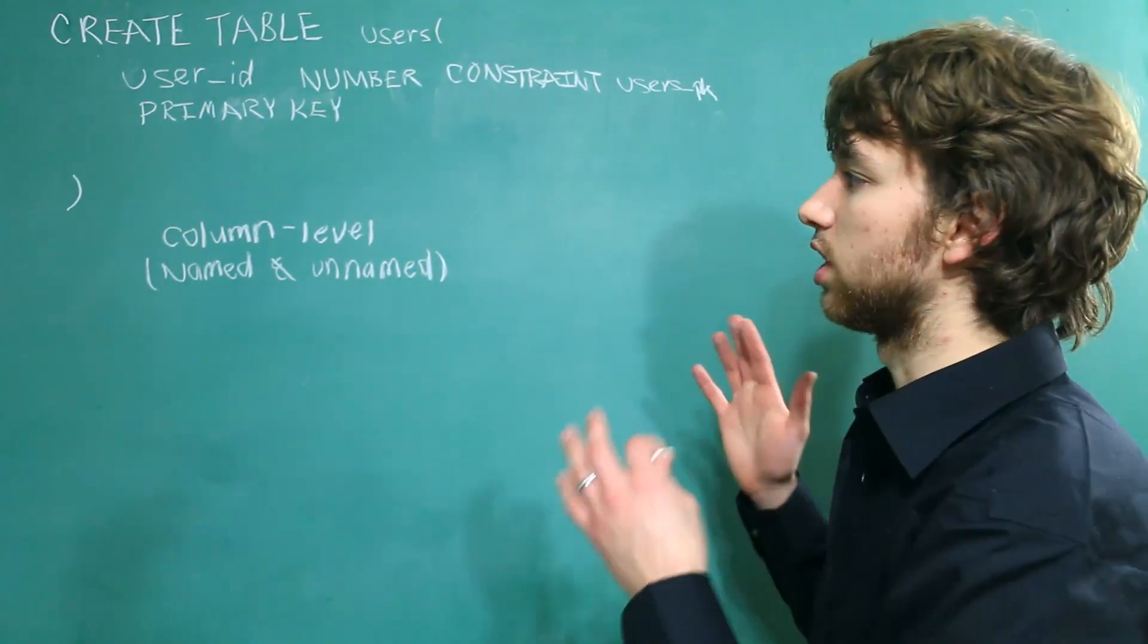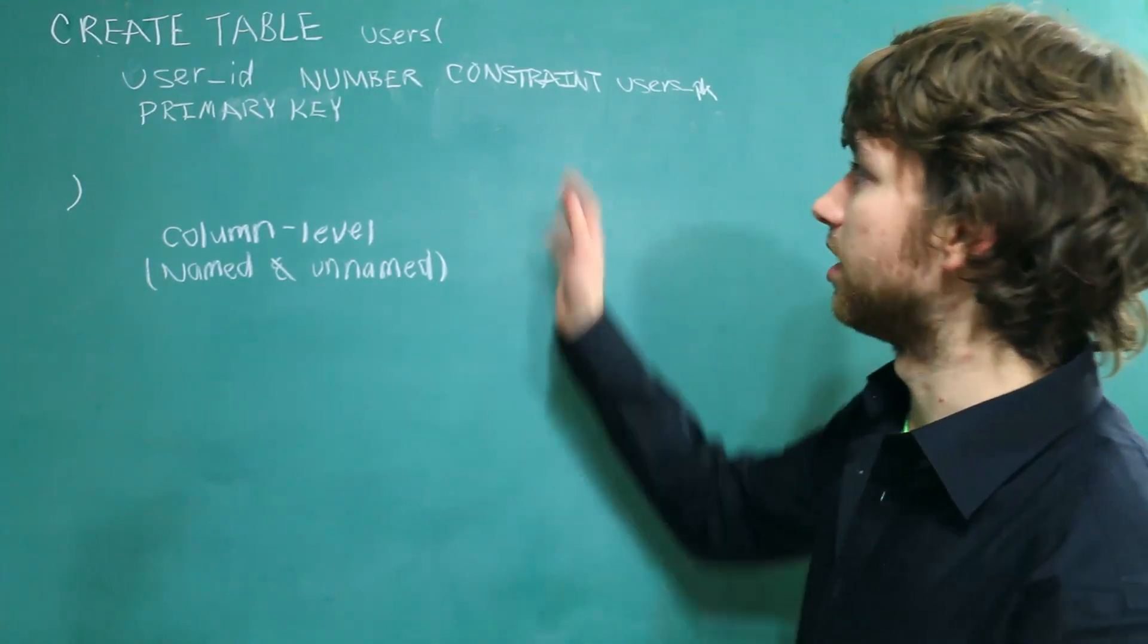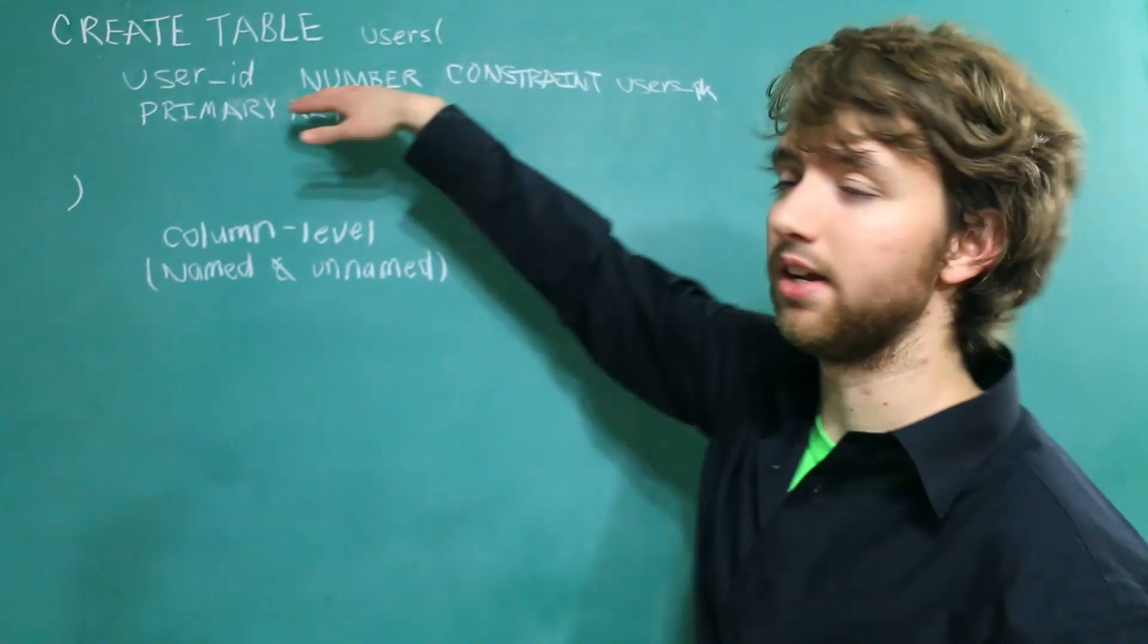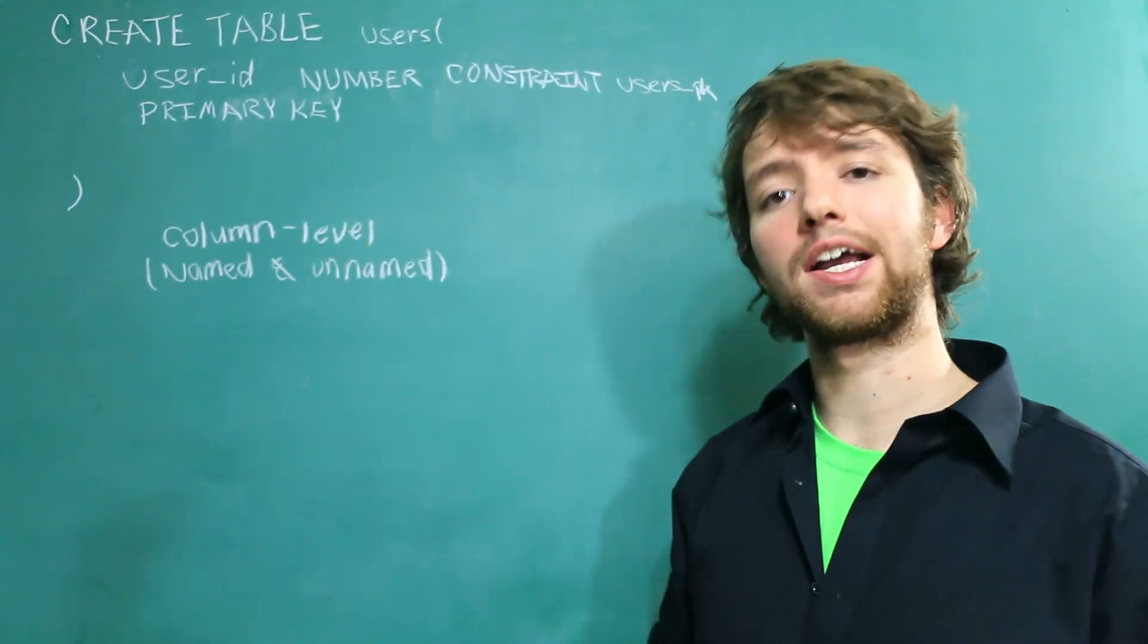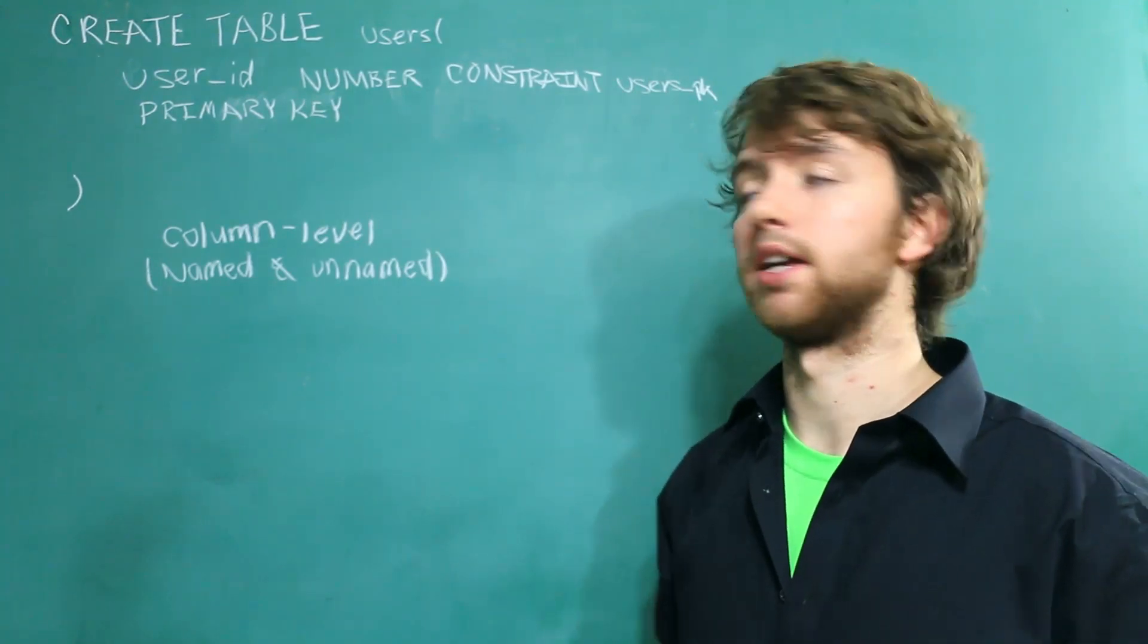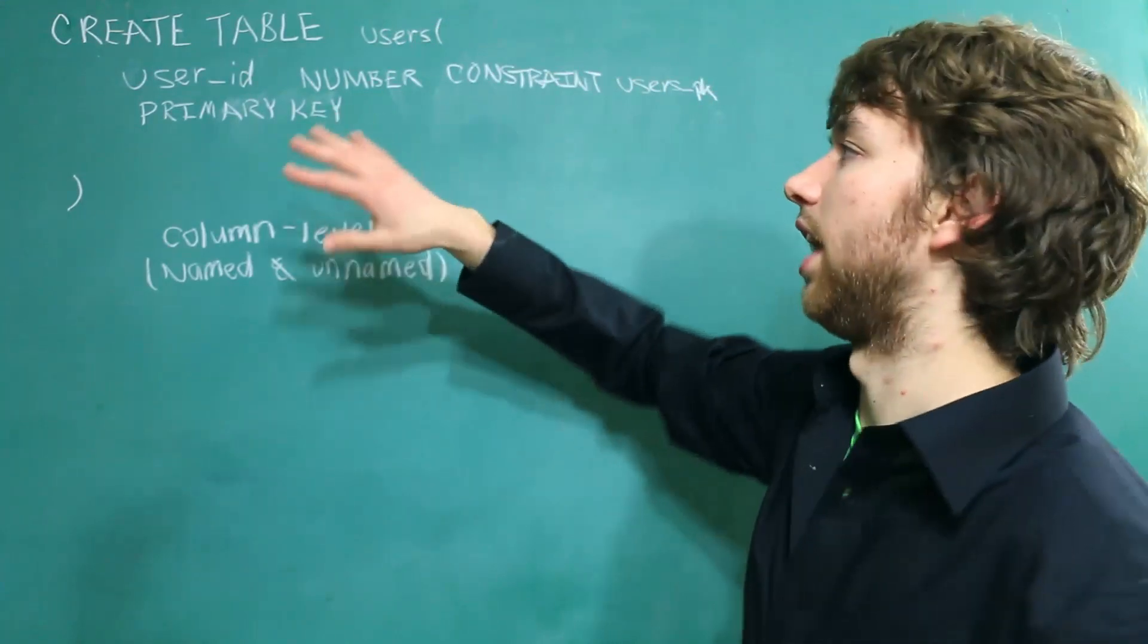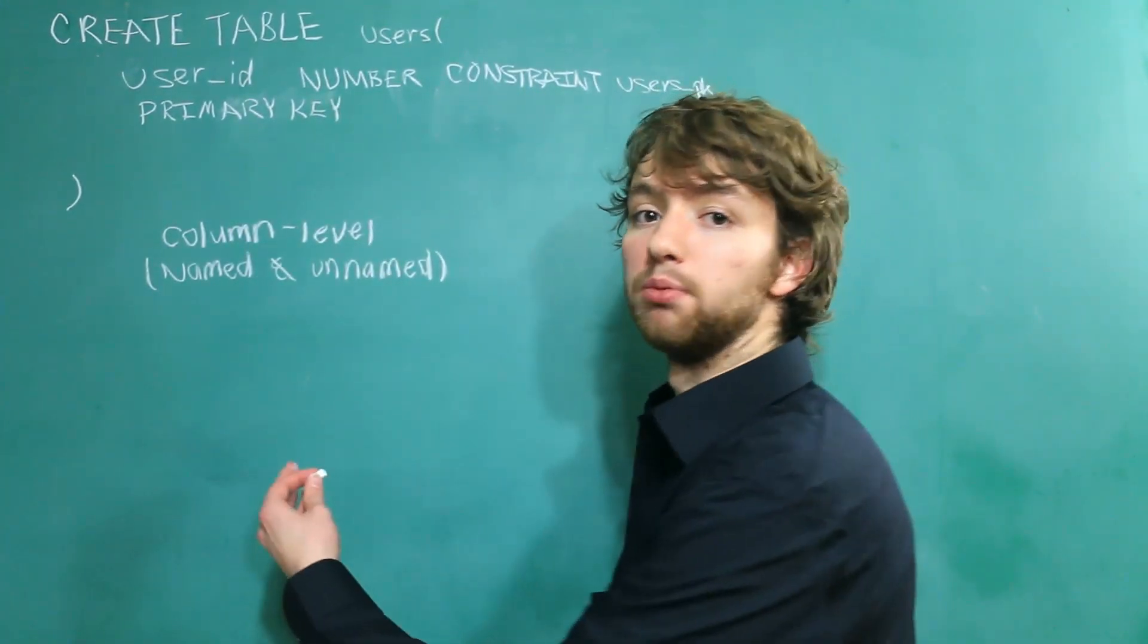The other possibility is actually not at the column level. It's at the table level. And what that means is we basically take this entire constraint and put it in the table as if it was its own column. Now, it's not actually its own column, but syntactically, that's the way it looks. We put user_id number comma, and then we put the constraint on a new line. So you can say that is created at the table level.